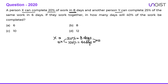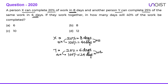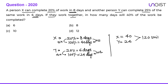Another person Y can complete 25% of the same work in 6 days. For 100% work, that is 4 times, so Y takes 24 days. The question asks: if they work together, in how many days will 40% of the work be completed? Take the LCM of 40 and 24, which is 120. Assume total work is 120 units. X does 120 ÷ 40 = 3 units per day; Y does 120 ÷ 24 = 5 units per day.